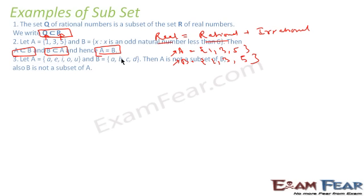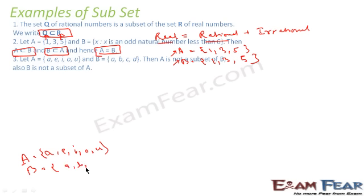Another example: A = {A, E, I, O, U} and B = {A, B, C, D}. There are some elements of A not in B — for example, I and E — so A is not a subset of B. Also, there are elements in B not in A — for example, C — so B is also not a subset of A. This is an example where neither set is a subset of the other.